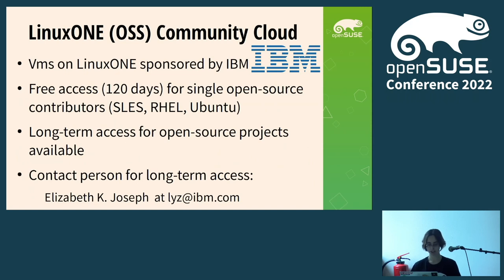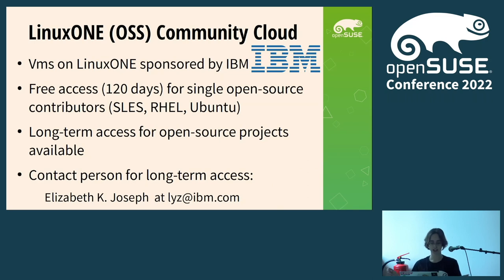IBM is providing all the support with hardware and VMs in the Linux One Community Cloud or the Linux One Open Source Software Community Cloud, all sponsored by IBM. You can receive free access for 120 days as a single open source contributor via the Linux One Community Cloud, or long-term access for open source projects via the Linux One Open Source Software Community Cloud. OpenSUSE has seven VMs in the Linux One Open Source Software Community Cloud, which we use for packaging, testing new software, and everything in that direction.